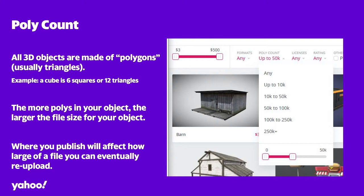Starting with mesh efficiency: the first breakdown is poly count. All 3D objects are made of polygons — usually triangles or squares, called tris or quads. A cube, one of the most basic shapes, is six quads or 12 tris. The more polys in a 3D model, the larger the file size will be.